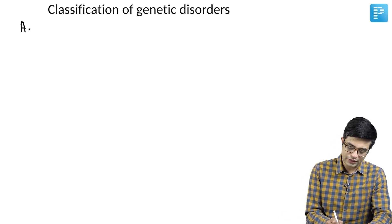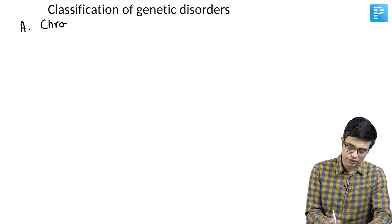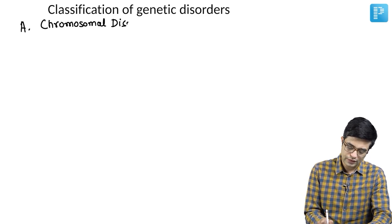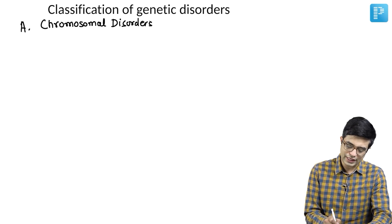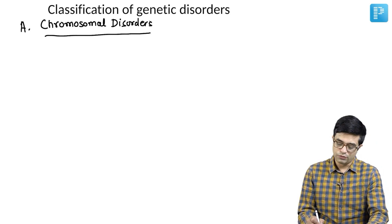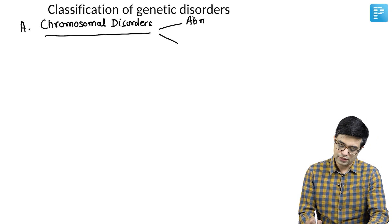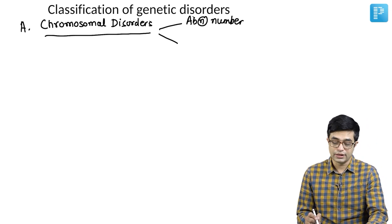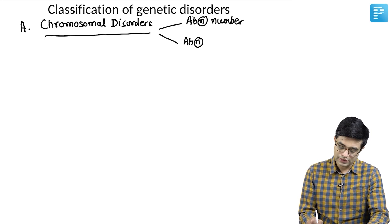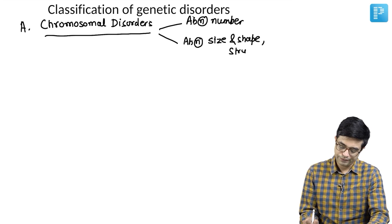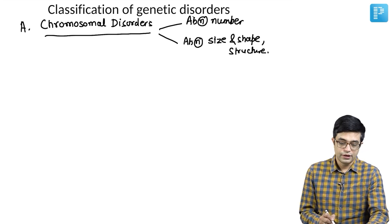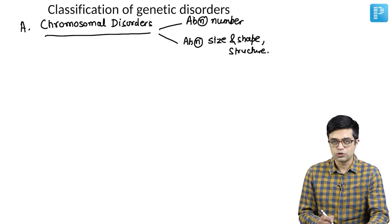The first way we classify them are the chromosomal disorders. Chromosomal disorders can further be divided into chromosomal disorders with abnormal number, called aneuploidies, or there can be abnormal size and shape as well as abnormal structure. We will be talking about chromosomal disorders in details.